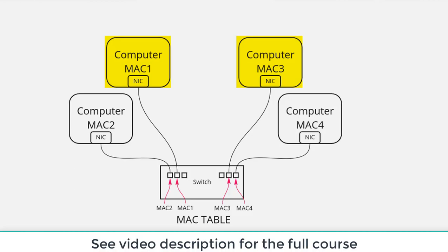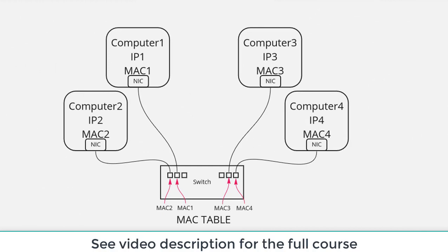The MAC address isn't the only address involved in this communication. Each computer also has an IP address — an address that we allocate and assign to these individual computers. It's not like a MAC address; a MAC address is hard-coded and associated with the physical network interface card. An IP address is something that we control and assign to these machines.